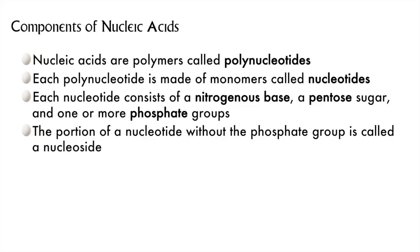Let's look at the parts of nucleic acids. They are polymeric, like carbohydrates and proteins, and the polymers are called polynucleotides. The monomers are called nucleotides. The nucleotides have three parts, like amino acids had certain consistent parts: a nitrogenous base, a 5-carbon sugar or pentose, and at least one phosphate group. If there are no phosphate groups, what you have is a nucleoside rather than a nucleotide.